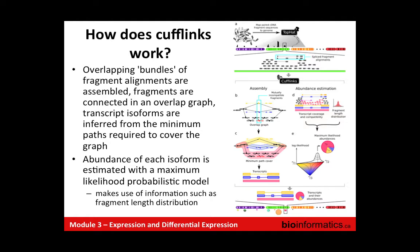If you have a good definition of transcripts and provide them, it gives Cufflinks a lot of information to start with and it will probably do a better job estimating expression for known genes and transcripts. But where it can't fit a piece into what's known, it will create a new transcript if it feels there's one not explained by existing annotations.